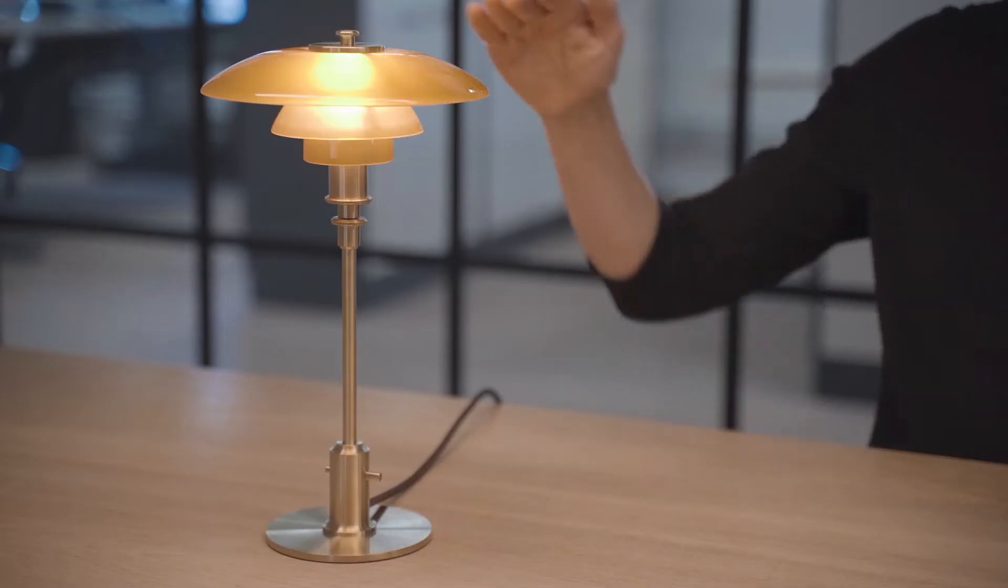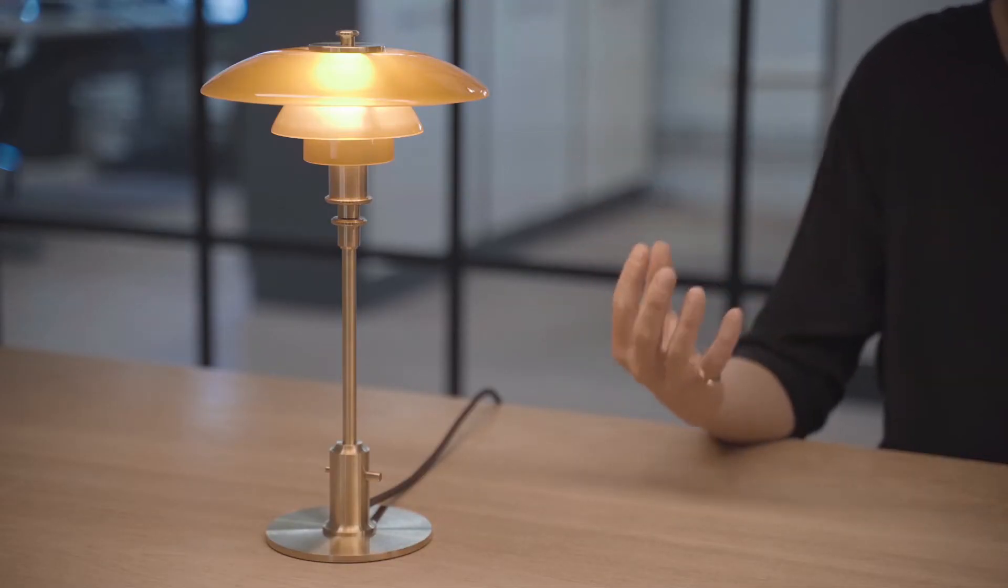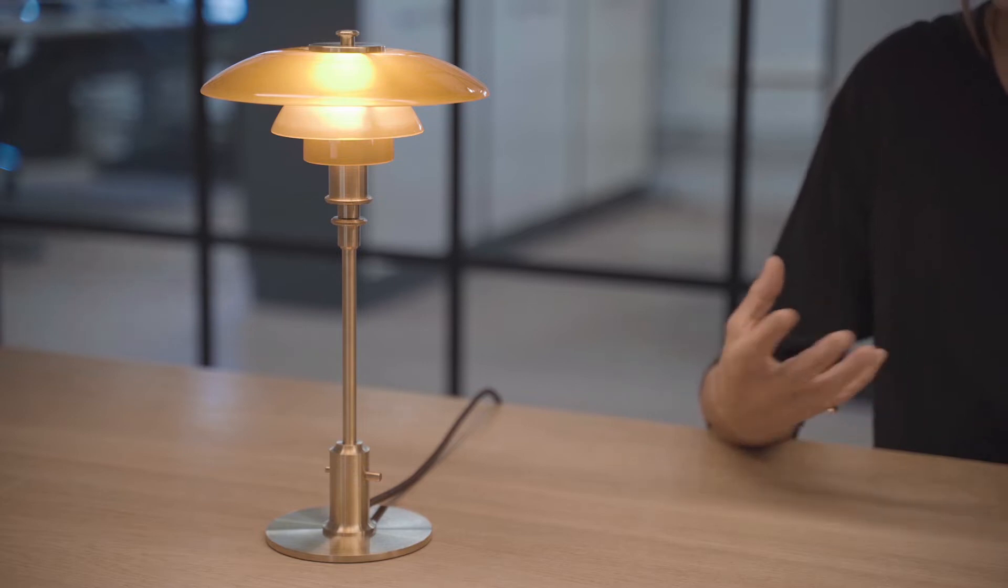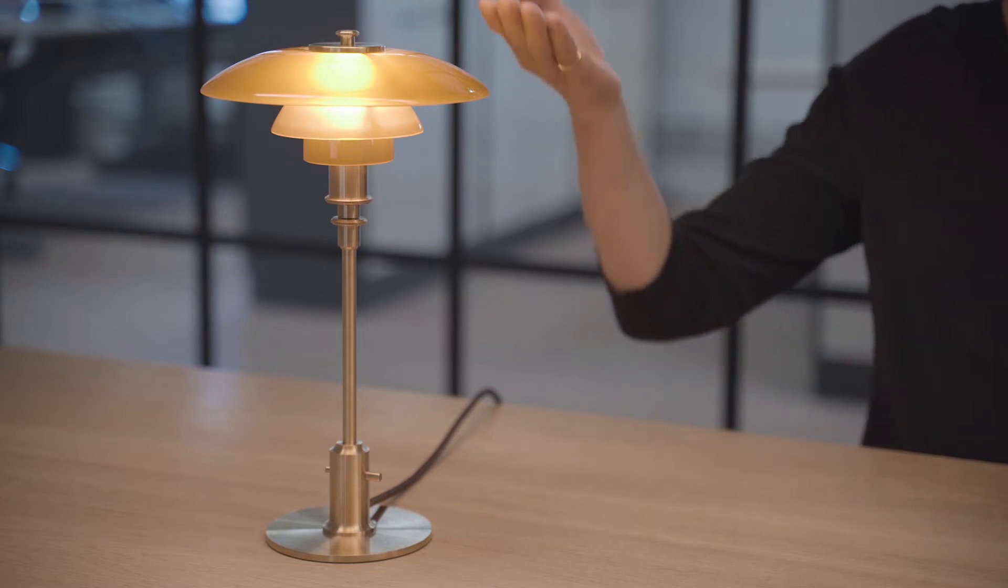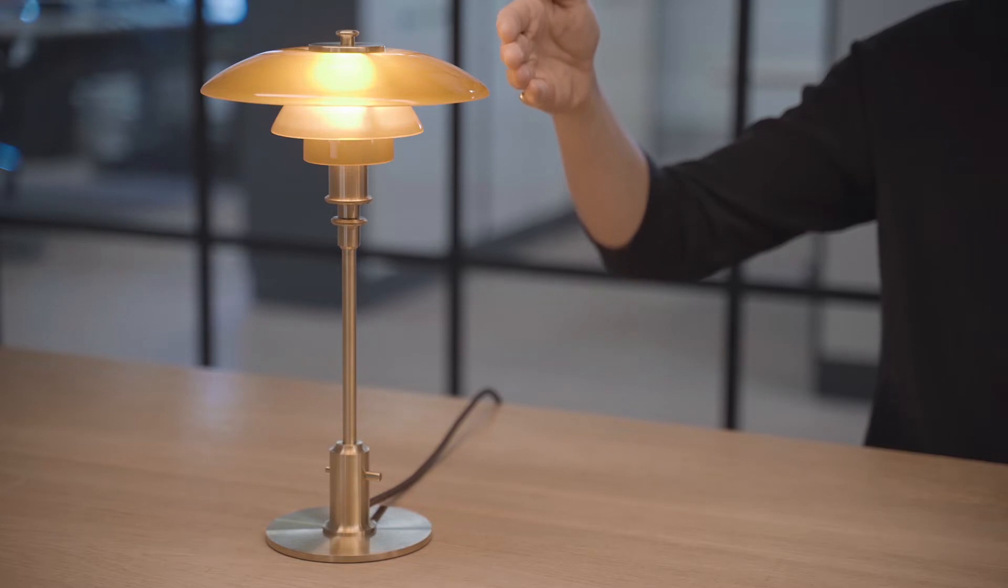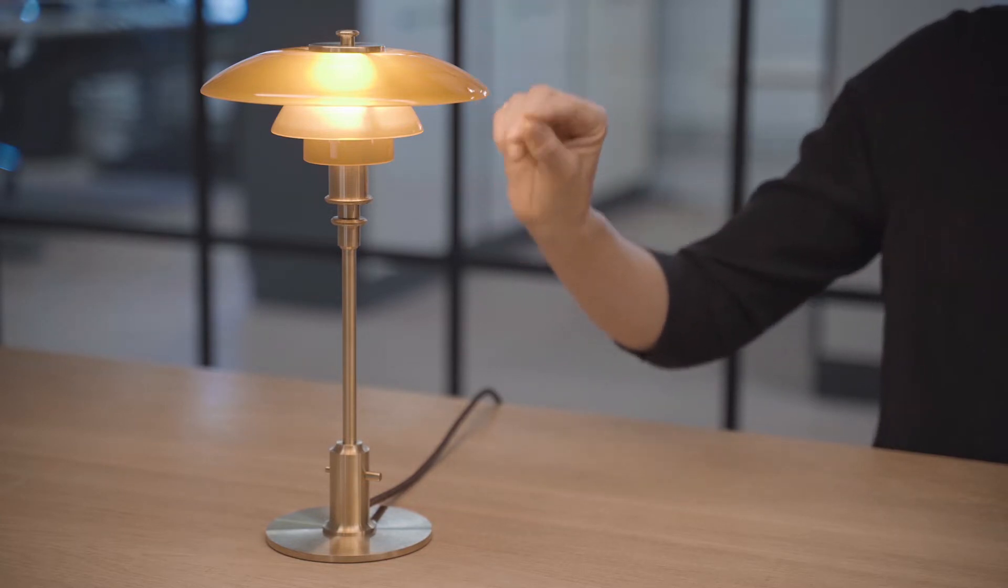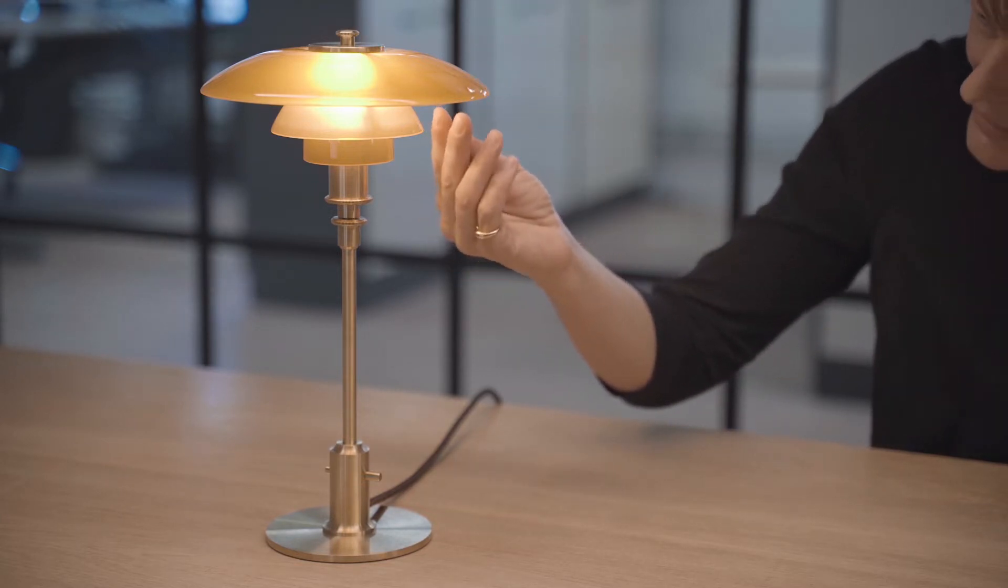The essential principle of the three shades is based on the so-called logarithmic spiral, which means that all the curvatures follow an organic curve. The center of the light source is placed in the focal point, creating a beautifully reflected and soft, harmonious light when it hits the curves of the shade and is reflected downwards.